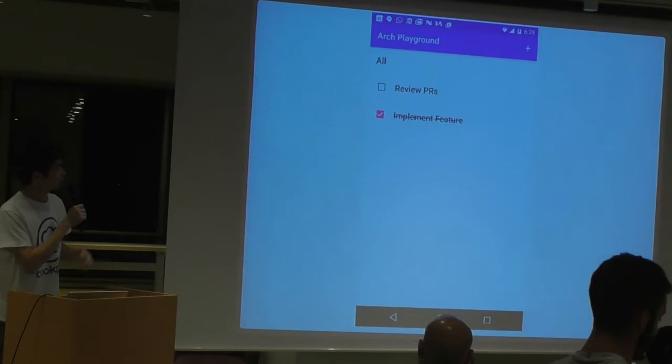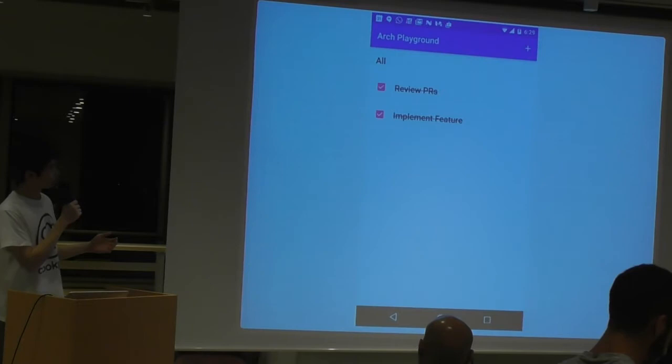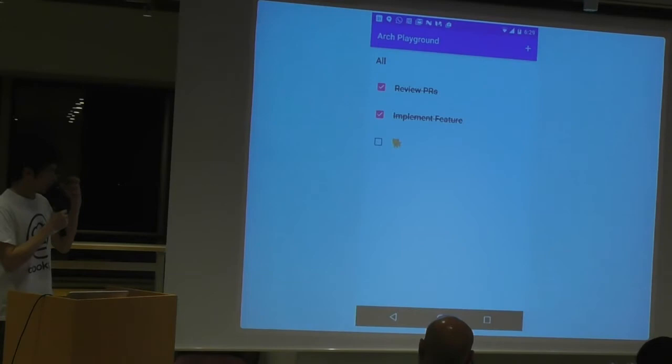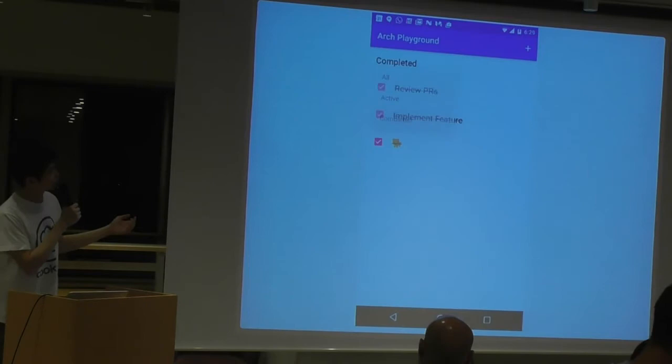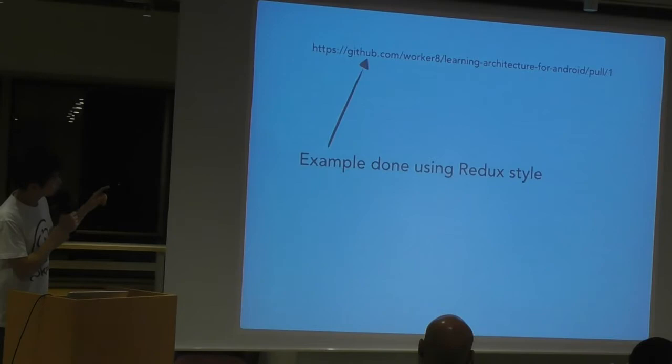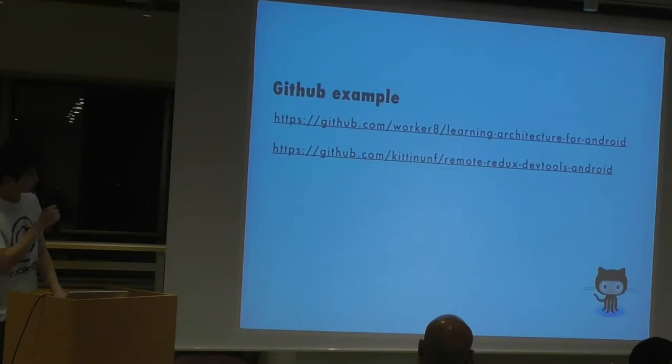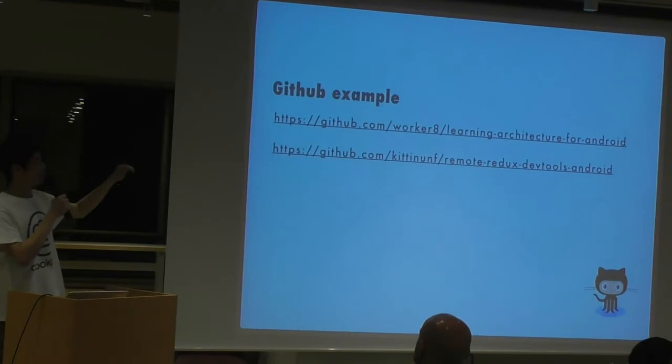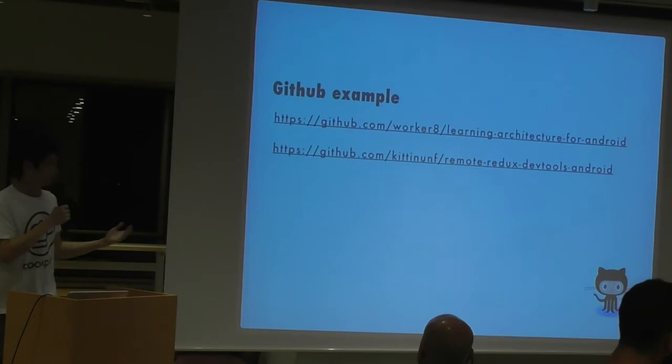The previous speaker also made another example: a grocery list app, a very simple one to showcase how we model an app the Redux way. It's a simple app with a filter. This is just to showcase the concept. The link is here — examples of doing it the Redux way. Just now I mentioned MVP, MVVM, MVPVM and tons of other architectures — it's all inside this repository. I'm still working on it, so don't be too picky on the code.